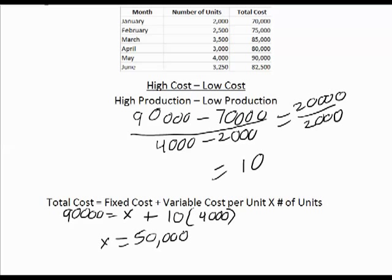So now we know that no matter what we produce next month or in the future, we know that we have a $50,000 fixed cost. And we also know that we have a $10 variable cost per unit no matter what we produce.